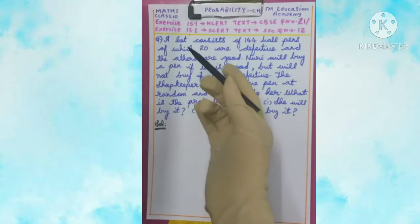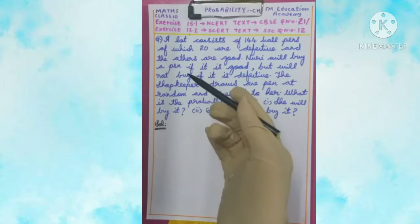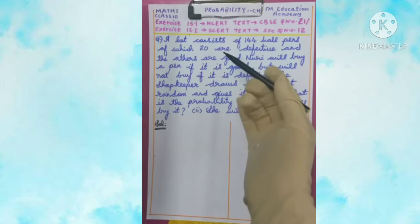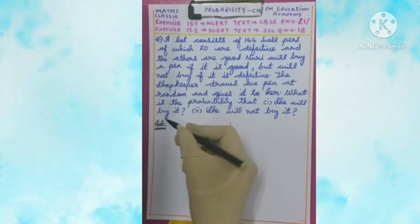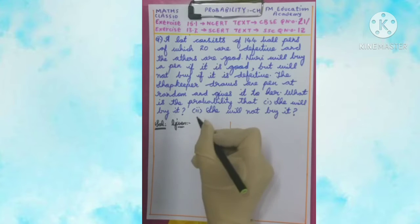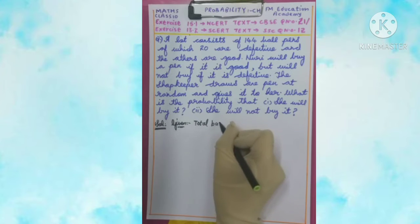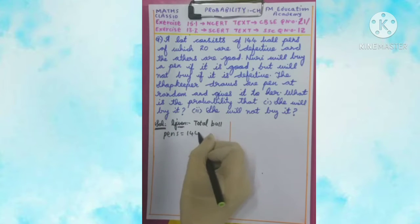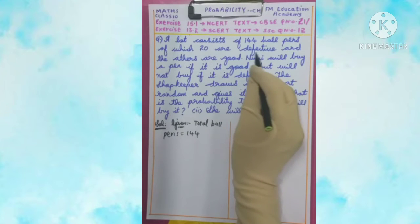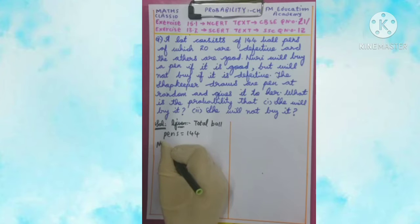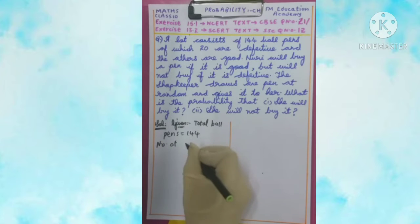Here, a lot means a collection. In that collection of ball pens, 144 ball pens are there in total. So first we write: given, total number of ball pens is equal to 144. Then it tells us 20 are defective — defective means they are not in good or working condition. So, number of defective pens is equal to 20.